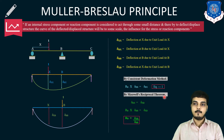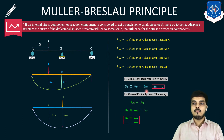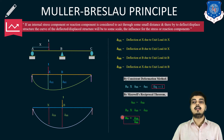Now we apply the Maxwell reciprocal theorem, which states that δ_bx = δ_xb. This means if a load is applied at one point, the deformation at the other point is the same as when the load is reversed. Substituting δ_bx with δ_xb, we get R_B × δ_bb = δ_xb, and therefore the reaction at B is: R_B = δ_xb / δ_bb. Here δ_xb is the deflection at x due to unit load at B, and δ_bb is the deflection at B due to unit load at B.